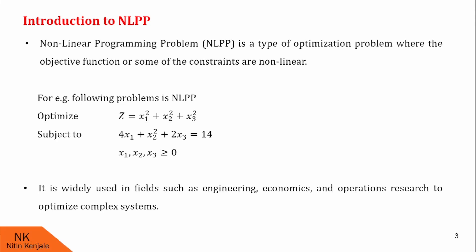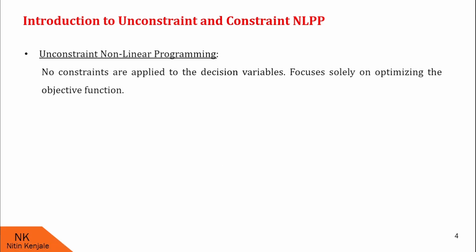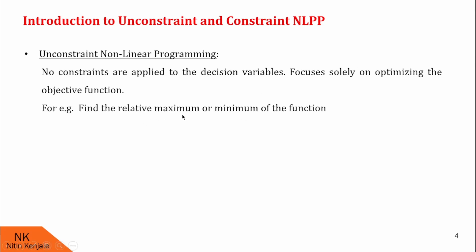Now let us proceed with the introduction to categories of NLPPs as unconstrained and constrained NLPP. First, unconstrained: no constraints are applied to the decision variables, and we say that the NLPP is an unconstrained NLPP. It focuses solely on optimizing the objective function. For example, find the relative maximum or minimum of z = x1² + x2² + x3² − 4x1 − 8x2 − 12x3 + 50. Such a problem is unconstrained NLPP because there is no constraint associated with the objective function.